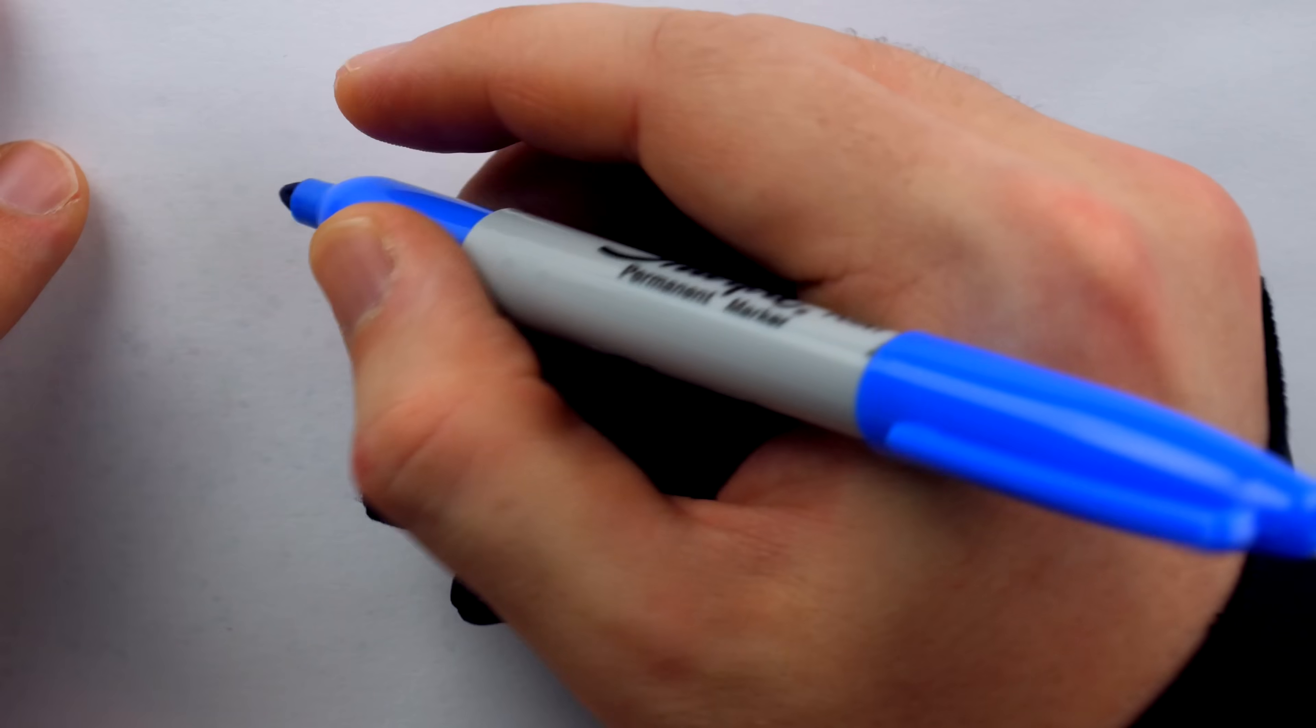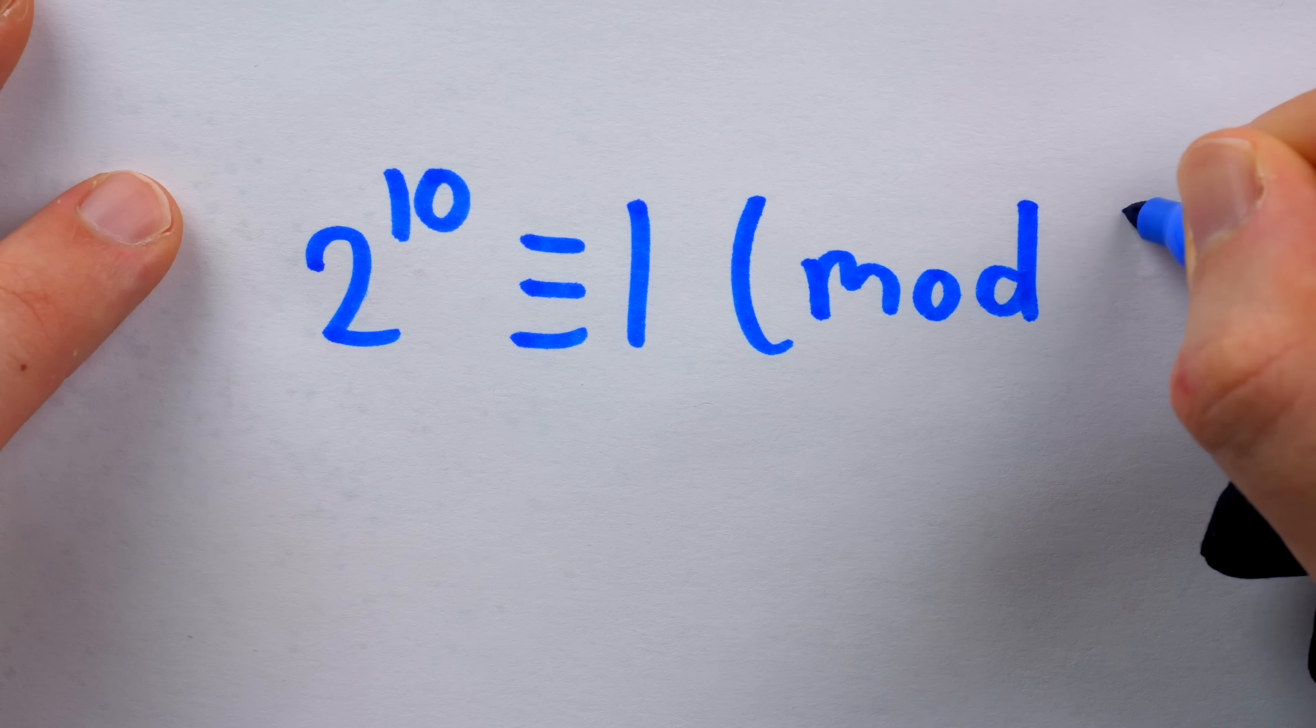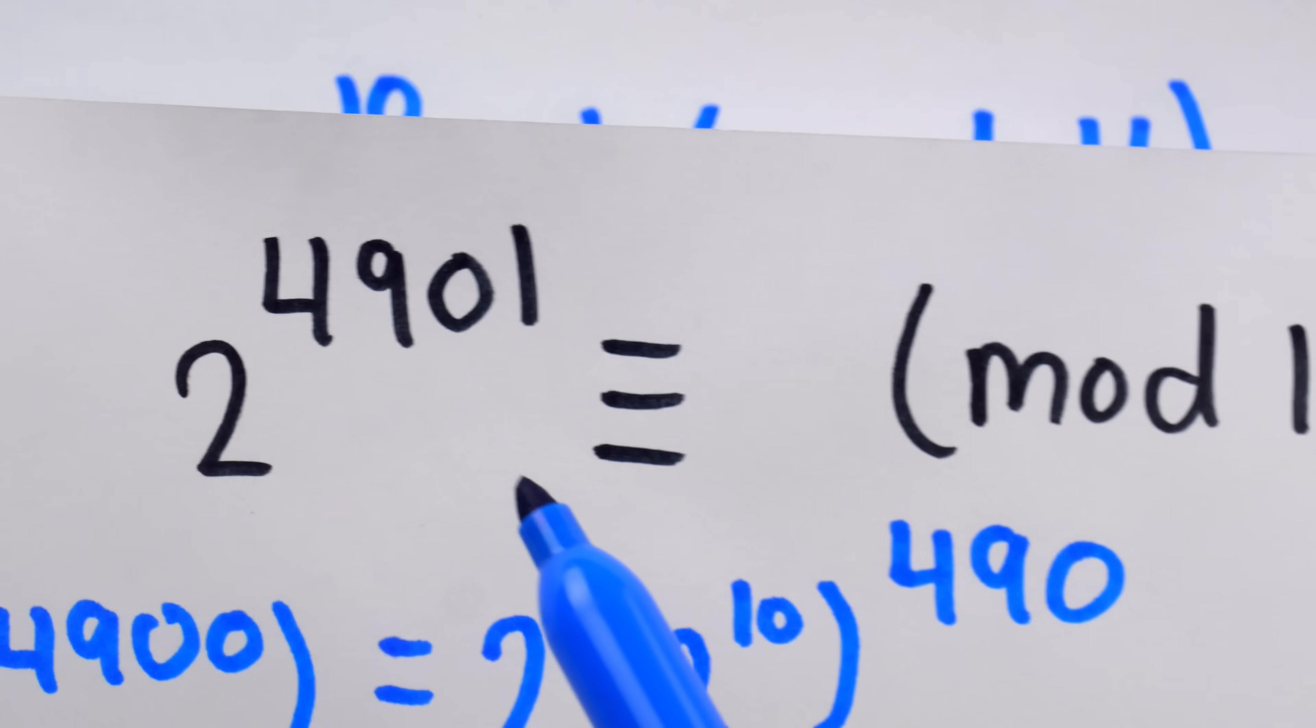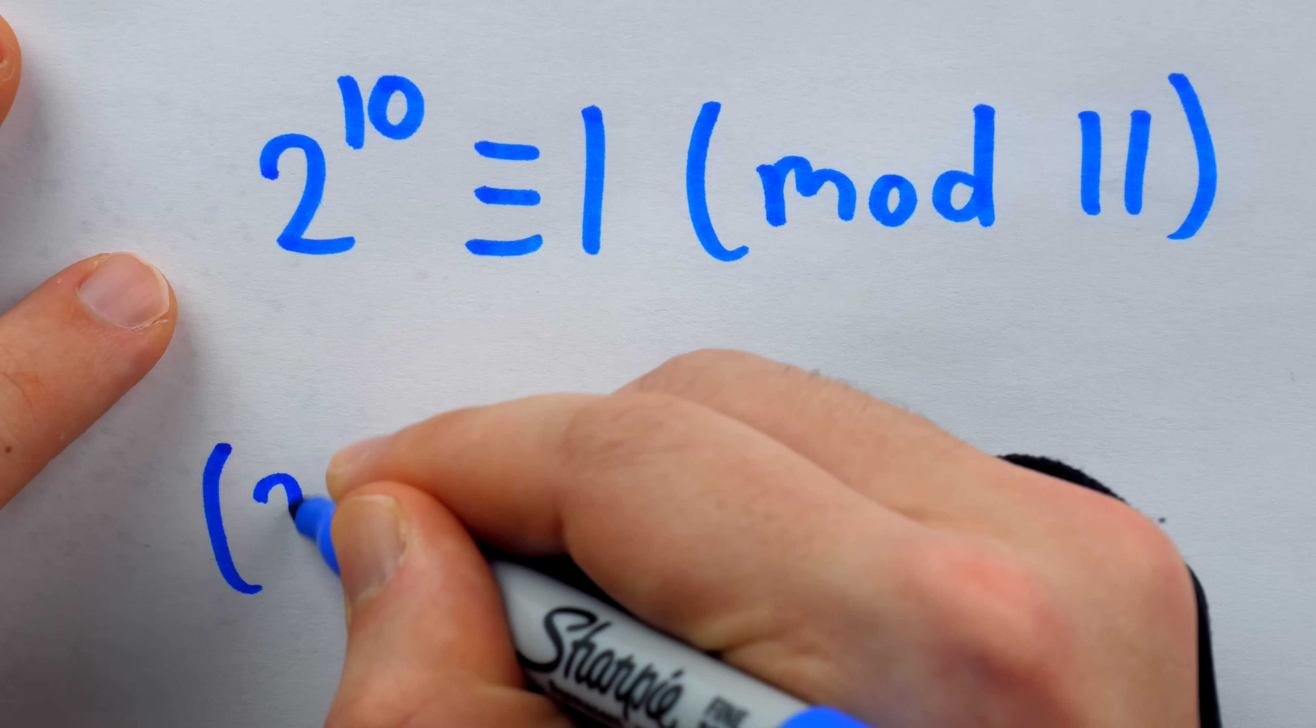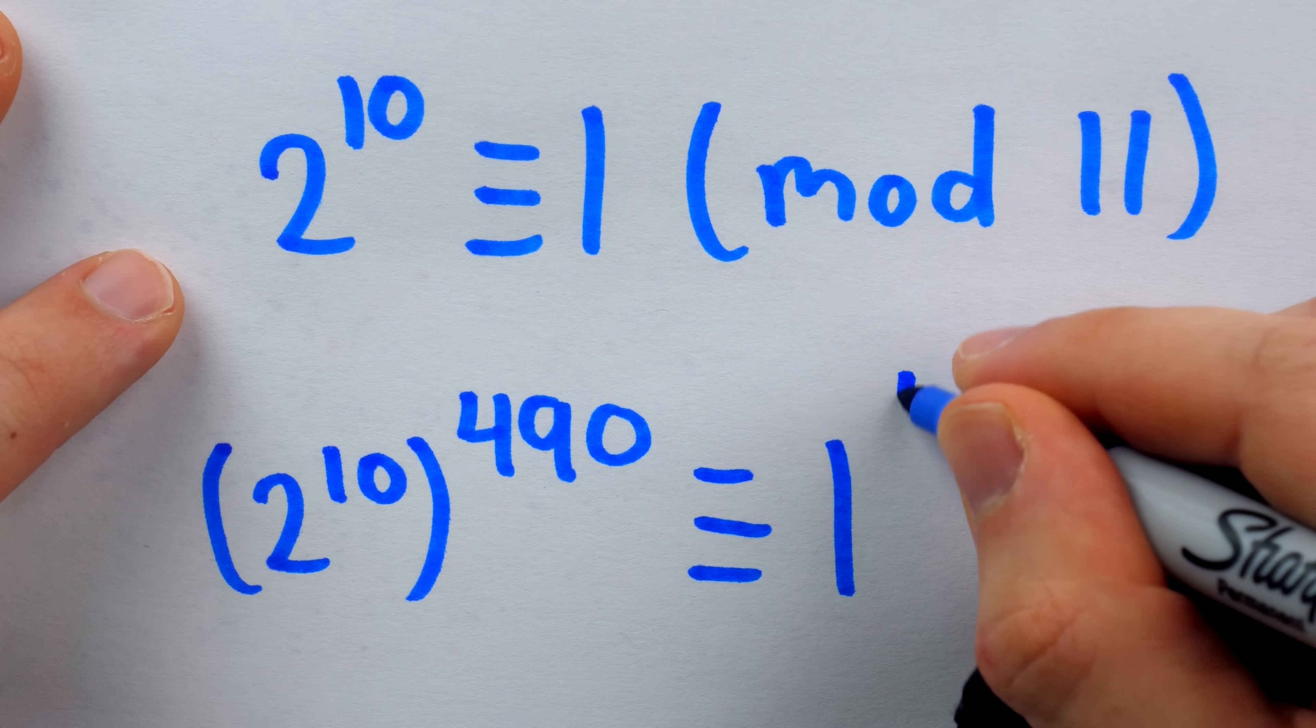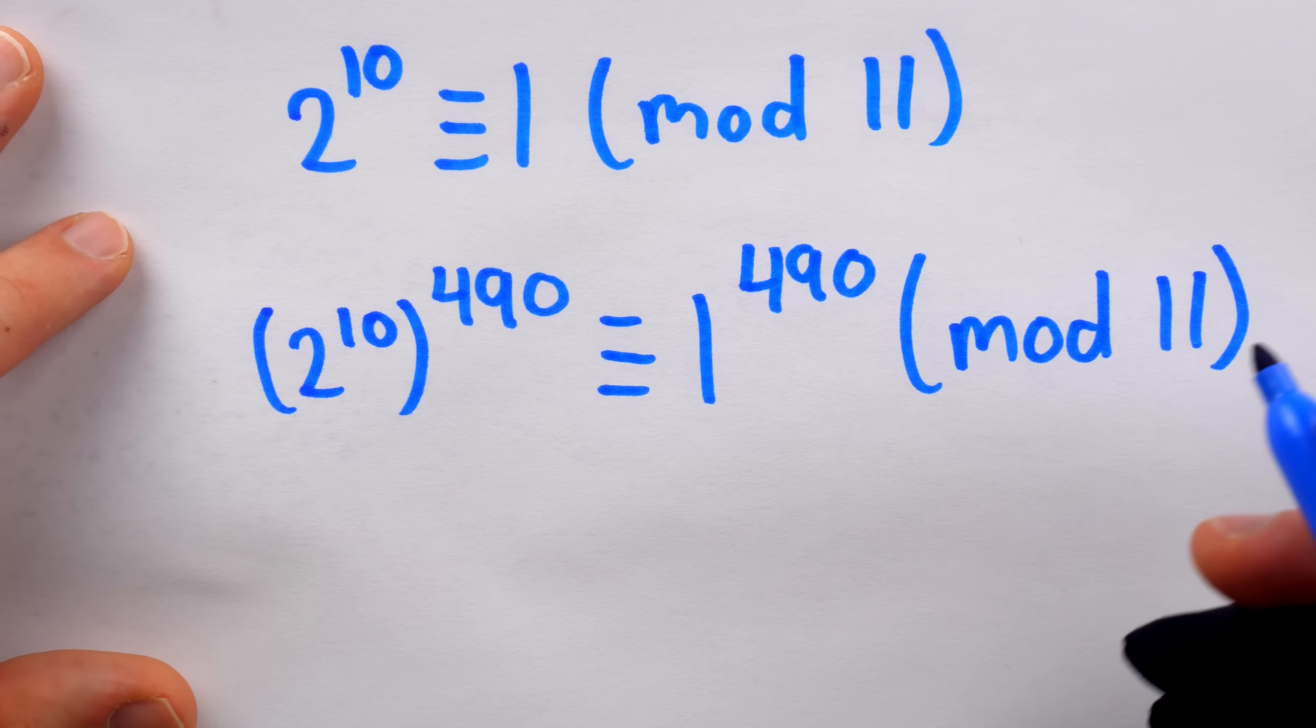So this means that 2 to the power of 10, which is 1024, is congruent to 1, that remainder we just found, mod 11. Then all we have to do is raise both sides to the power of 490, and then multiply by 2 to get back to the original number we were actually interested in. Raising the left side to the power of 490 gives us 2 to the 10 to the power of 490. And of course on the right we have 1 to the power of 490, and this is mod 11. And then we just have to finish by doubling both sides.